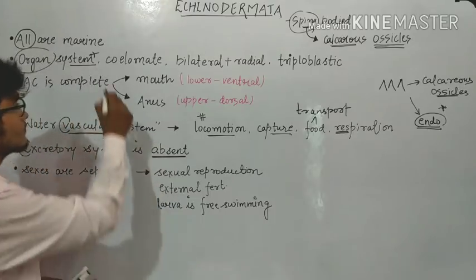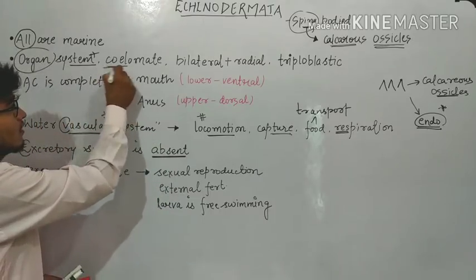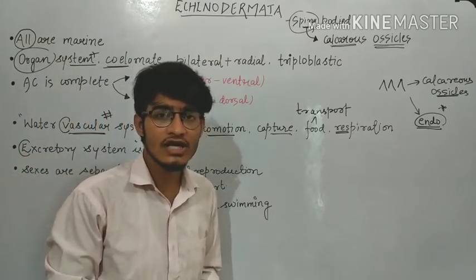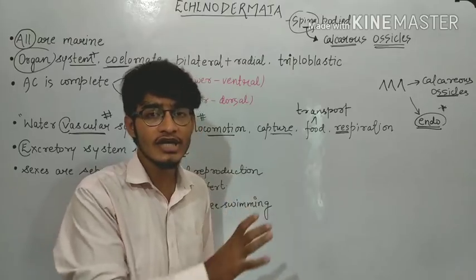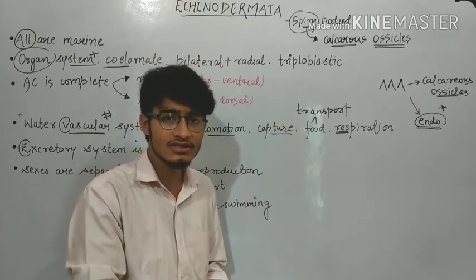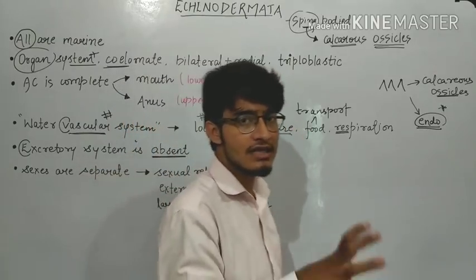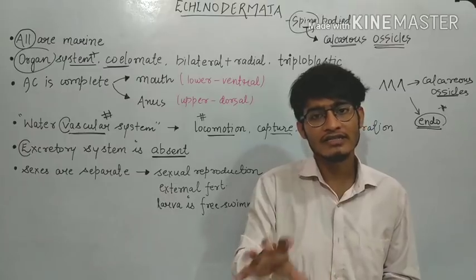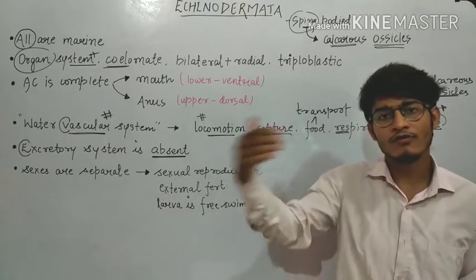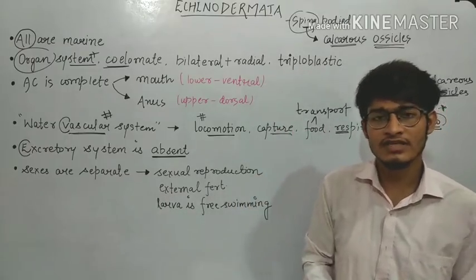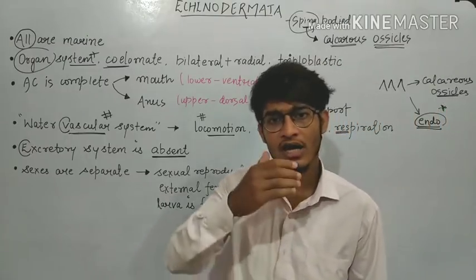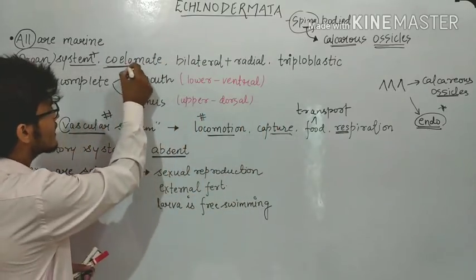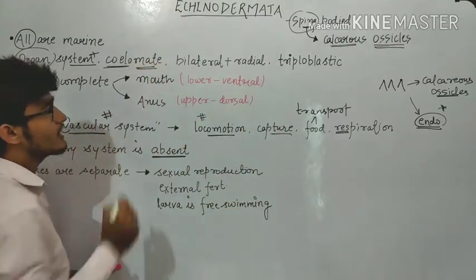Next is the coelom. Porifera, Coelenterata, Ctenophora, and Platyhelminthes are acoelomate, which come before Aschelminthes. Aschelminthes is pseudocoelomate — that is, having a false coelom. And after Aschelminthes, all animals contain a true coelom and are coelomates.